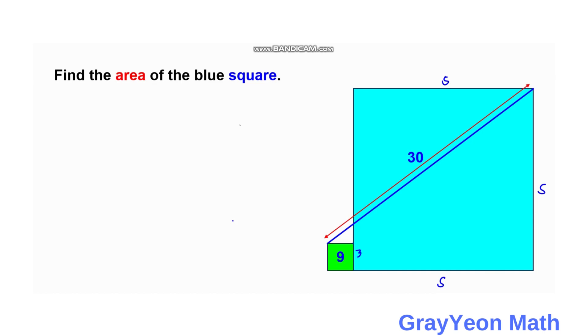If we draw a line from this point of the green square towards this side of the blue square, we actually form a right triangle.